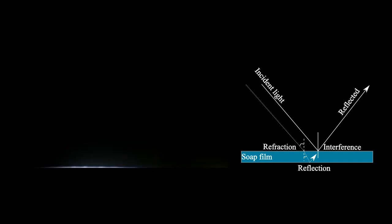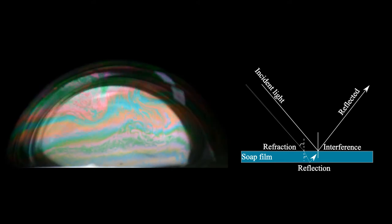Iridescence is an indicator of the local thickness of the soap film. The black spots which appear in the video are regions where the film thins below 50 nanometers.